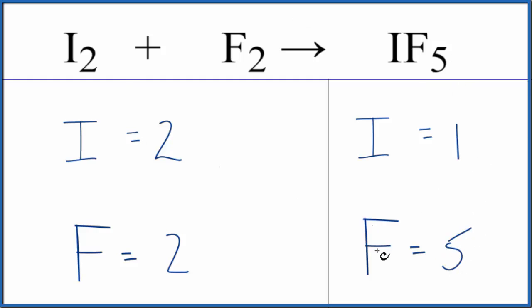When I get something like this with an odd number, I like to get it to an even number. That normally makes things a lot easier to balance. Especially because F, it's by itself over here.